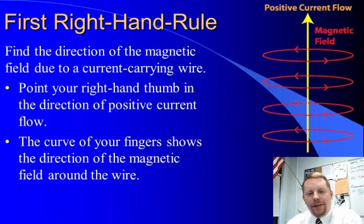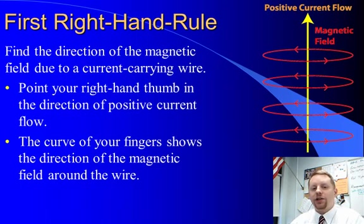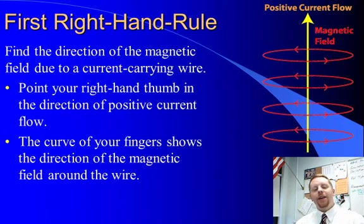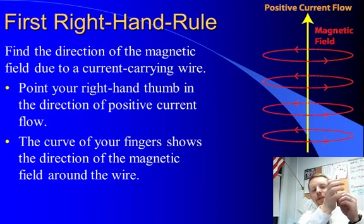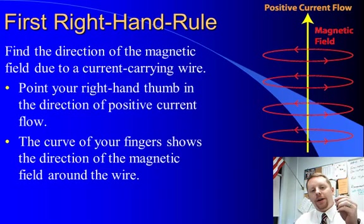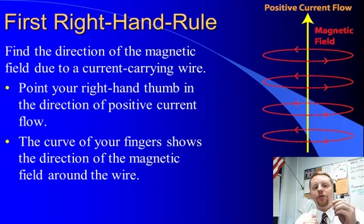The direction of the magnetic field can be determined using the right-hand rule. We're going to look at the first right-hand rule — there are actually three of them, but we're only going to talk about one for now. If we have a wire with current moving up, take your right-hand thumb, point it in the direction positive current flows, and then wrap your fingers around that wire. The direction your fingers curl tells you the direction of the magnetic field at those points.